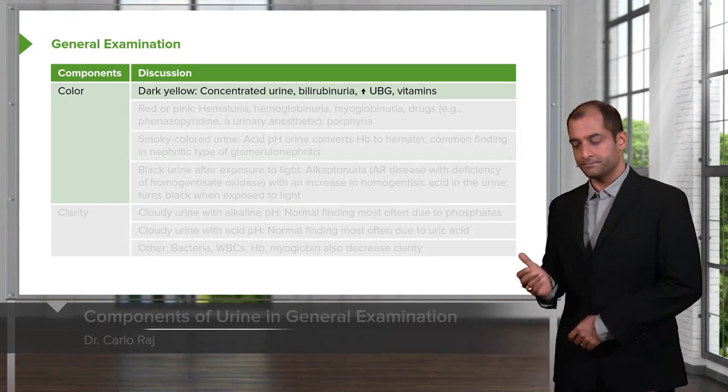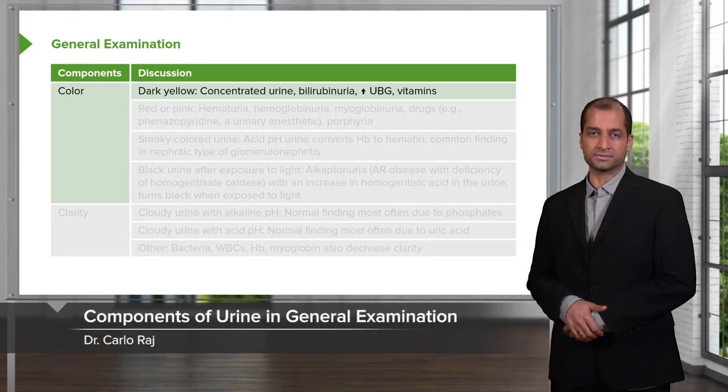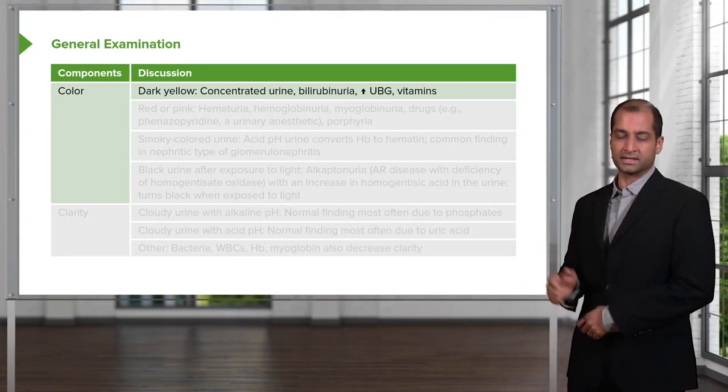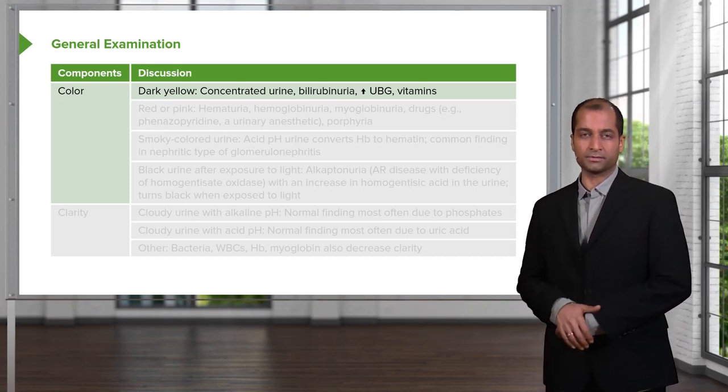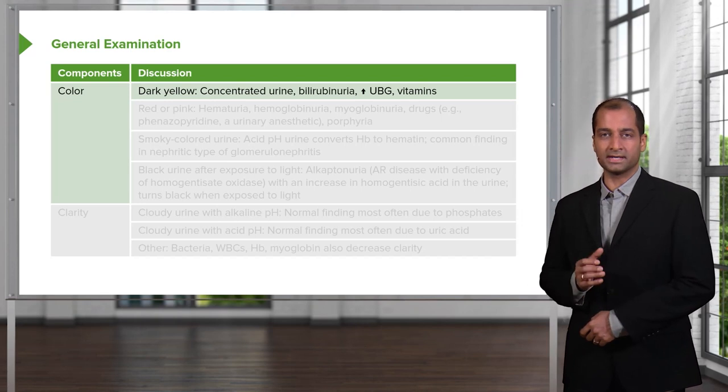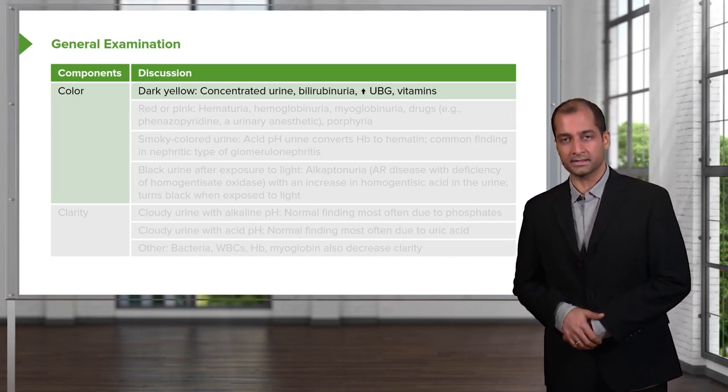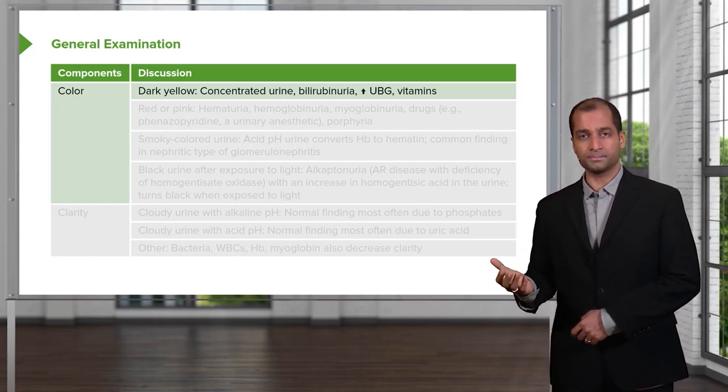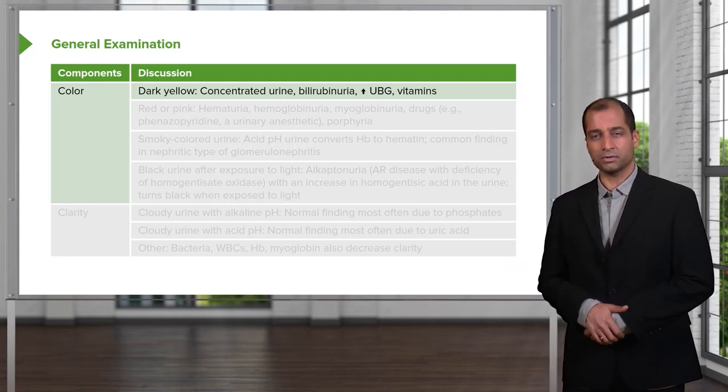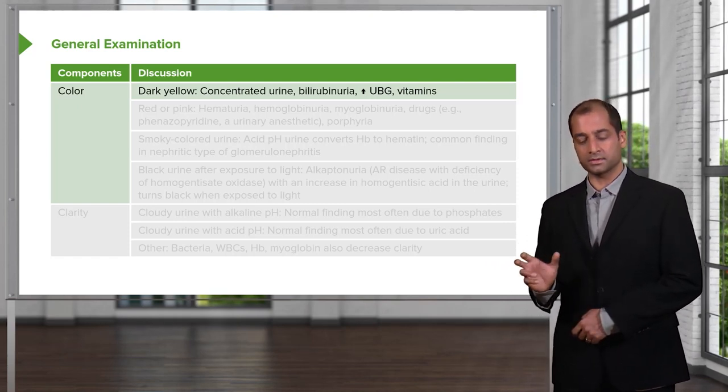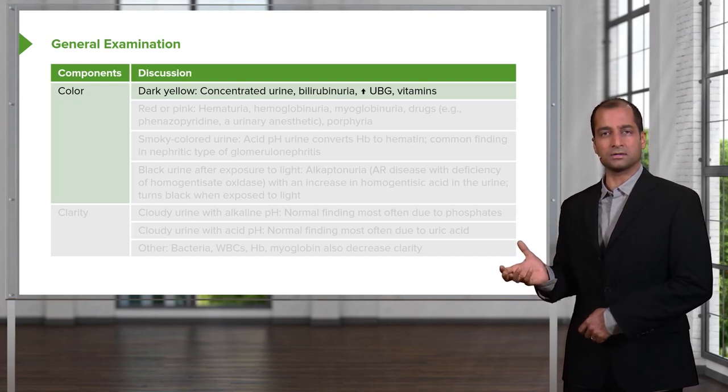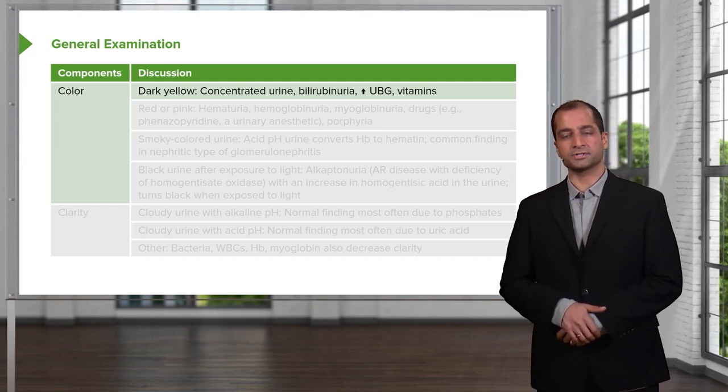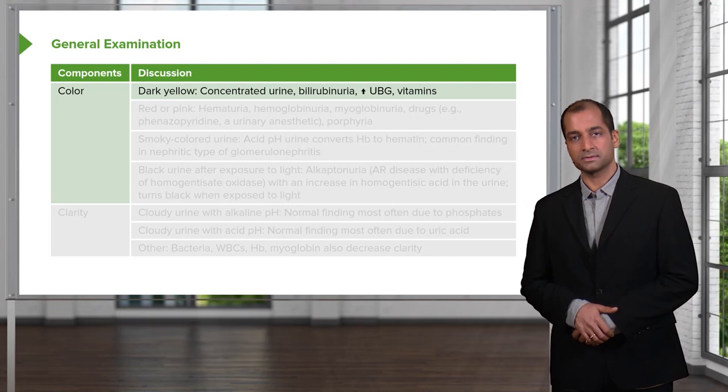This table, there are a few tables we'll be looking at in this lecture series and it would behoove you to spend a little time and make sure that you understand each statement. First component of urine on general examination is color. If it's dark yellow, maybe concentrated urine. So tell me about your patient. Maybe dehydrated, maybe excess sweating.